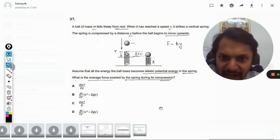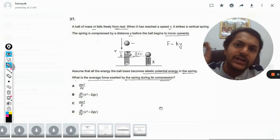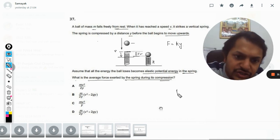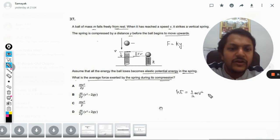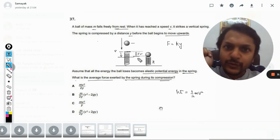Now at this point, the ball is having only and only kinetic energy. So the kinetic energy of the ball will be half mv squared, which is now converted into the potential energy of the spring.